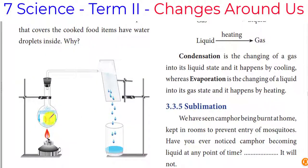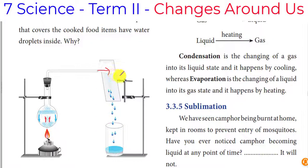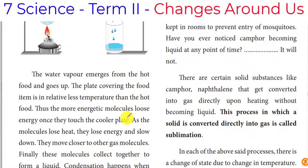Condensation: if we have a cold water bottle, moisture from the air condenses on its surface. The water vapor becomes liquid. This is called condensation — we are getting the water back.